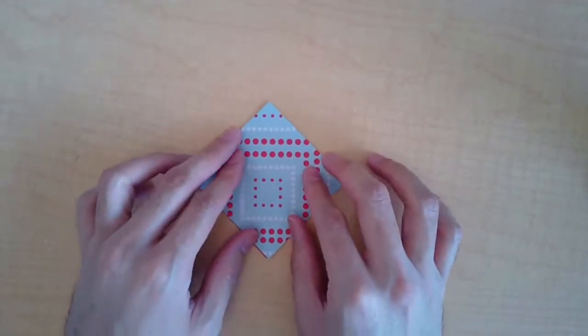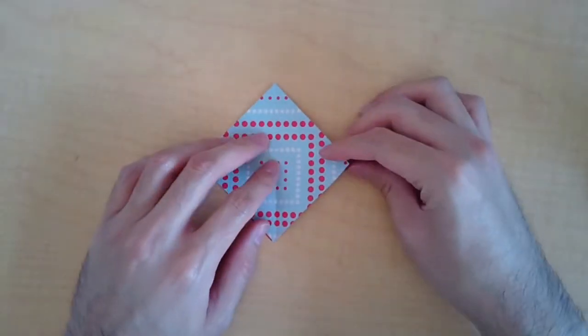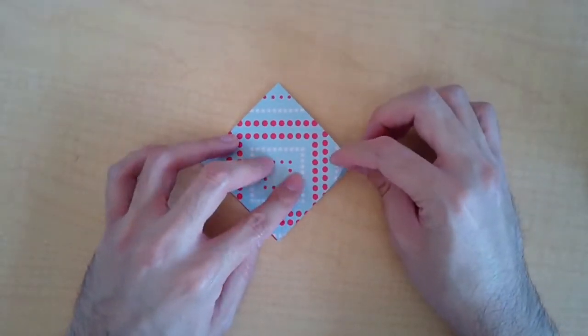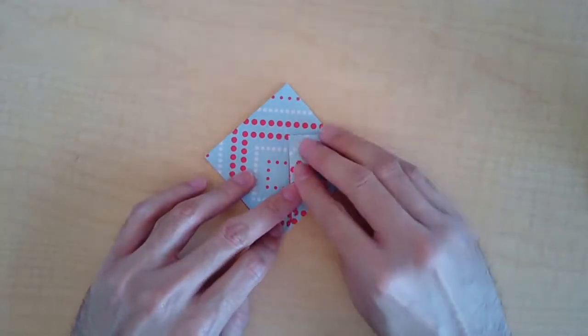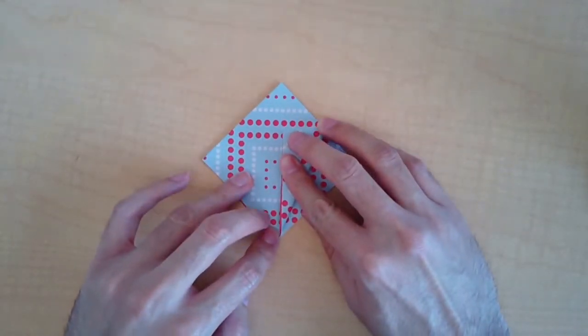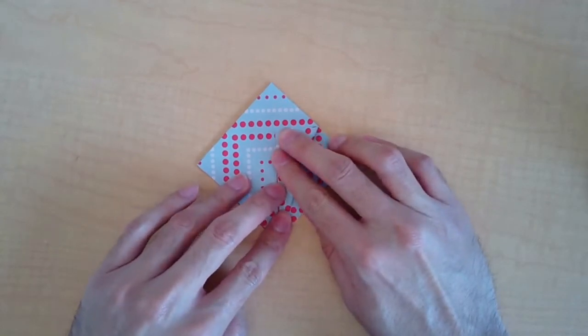Next you're going to grab the front flap on the right side, fold it down the middle, and then crease it.